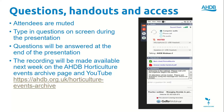For those who haven't joined an AHDB webinar before, you should see a panel on the right-hand side of your screen. Go to the grey bar under questions, drop down, and type a question — it'll be visible to me and I'll ask the presenters. We'll take questions at the end, but type them as we go so nothing is forgotten. There's also a handout where you can pop your email details.